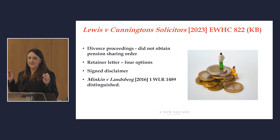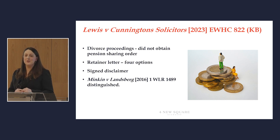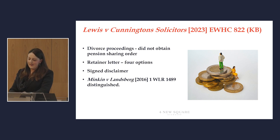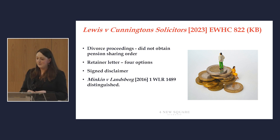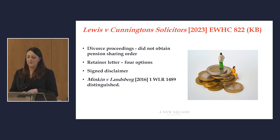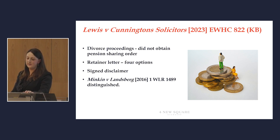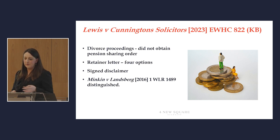Fast forward a few years later, Mrs Lewis comes across Divorce Lifeline online, which offered to investigate potential claims for individuals who felt that their divorce settlements may have been unfair. Somewhat unsurprisingly this led to Mrs Lewis instructing solicitors and bringing the claim against Cunningtons. The scope of the defendant solicitors' retainer was one of the key issues in dispute. The solicitors' primary position was that Mrs Lewis had agreed to the proposed settlement without any involvement by them and in the absence of financial disclosure, leading them to tell her they were unable to comment on the reasonableness of the settlement, and they also relied on the express disclaimer that Mrs Lewis had signed.